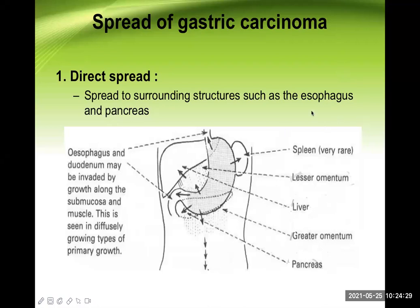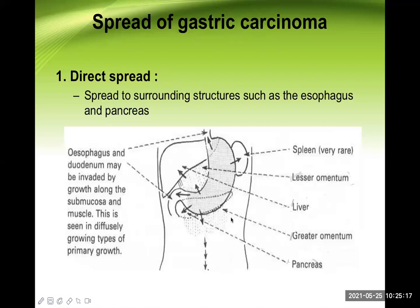Let's talk about how gastric cancer spreads. First is direct spread to surrounding structures. The important surrounding structures are the lower end of the esophagus, pancreas (present right in the stomach bed), spleen, liver, porta hepatis, lesser omentum, and greater omentum. If these organs are involved by direct spread, we call that local invasion.